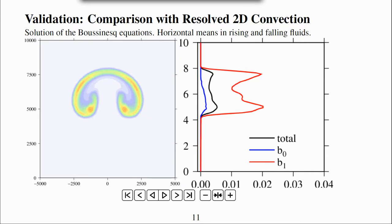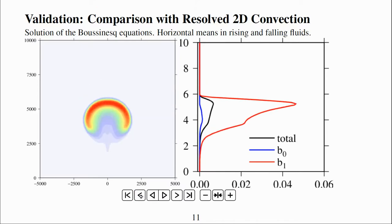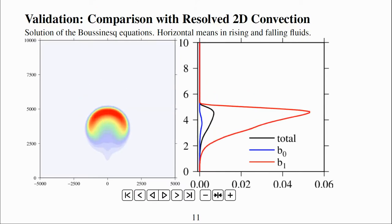After a thousand seconds, there are two peaks in buoyancy in the horizontal mean, but at 500 seconds the flow is simpler and there is just one peak in the horizontally averaged buoyancy.